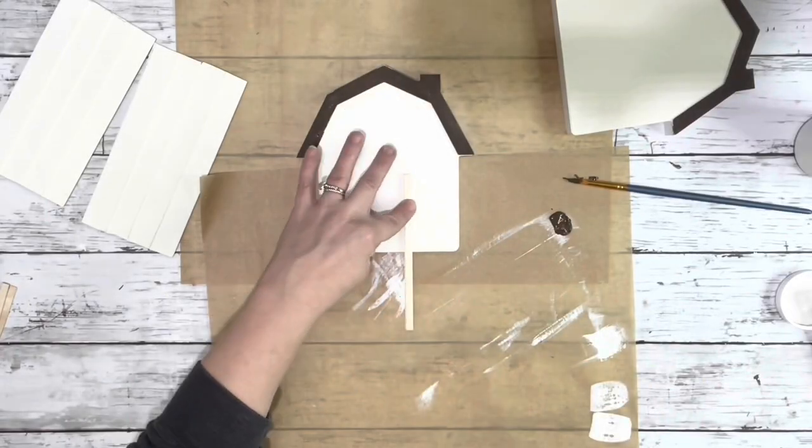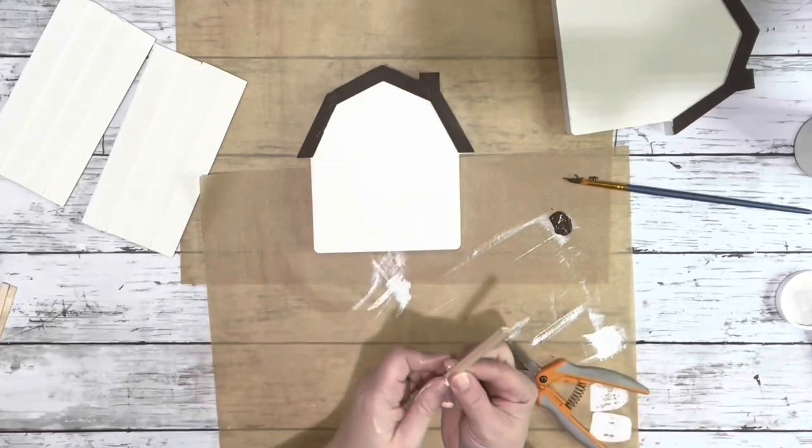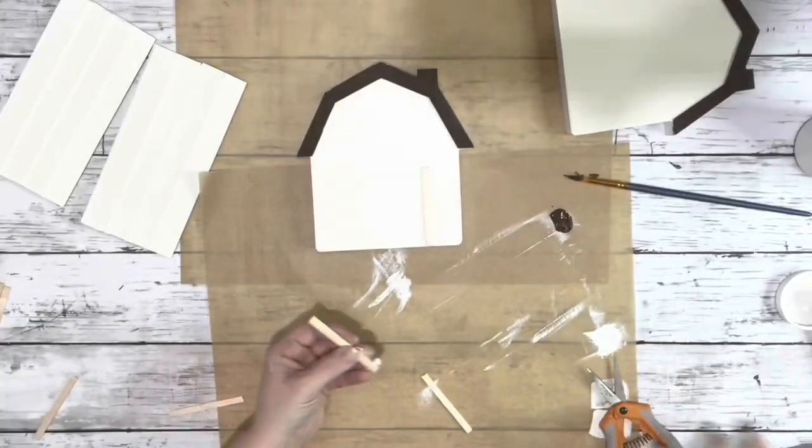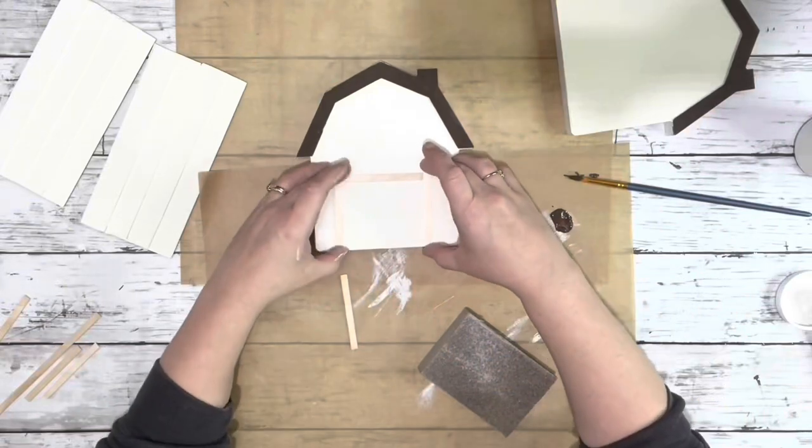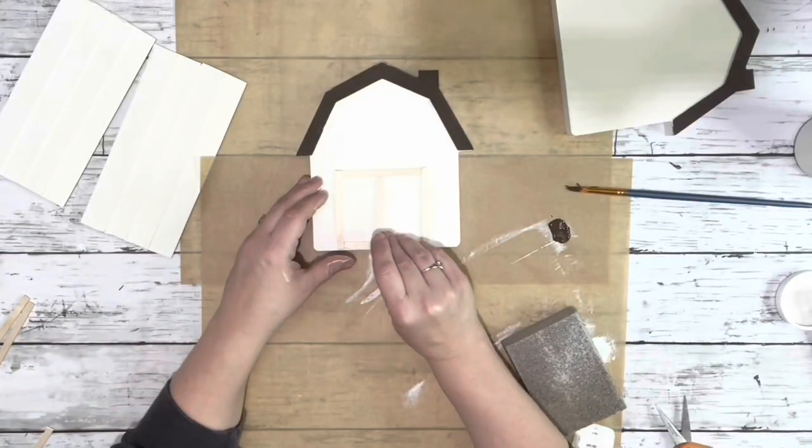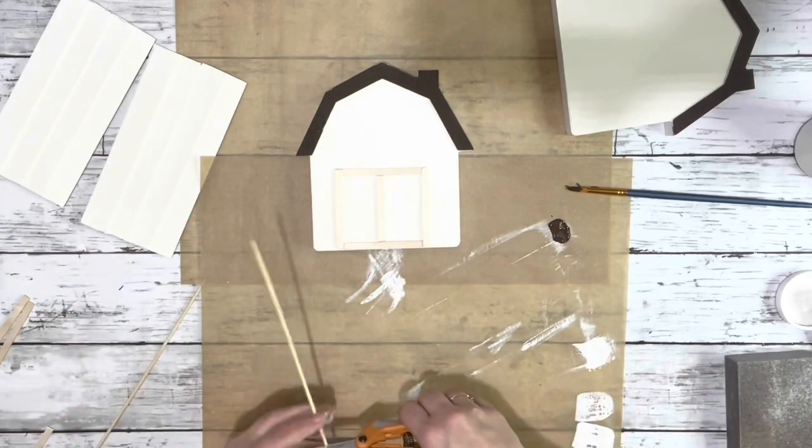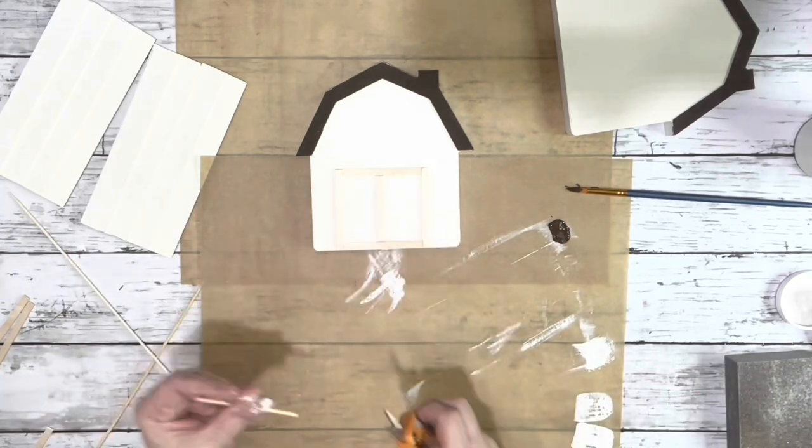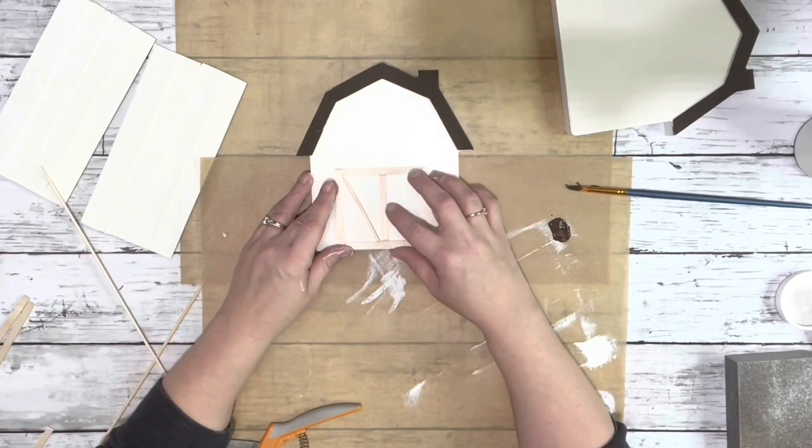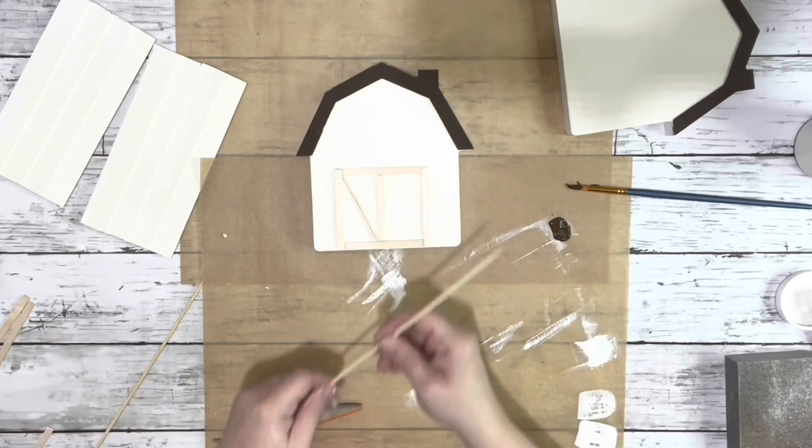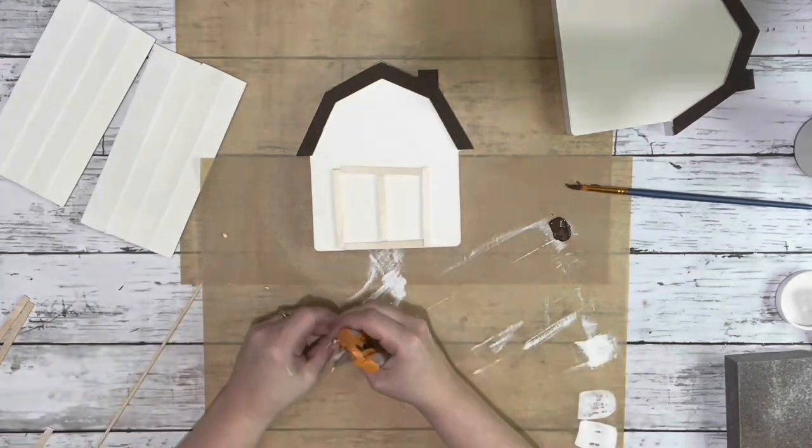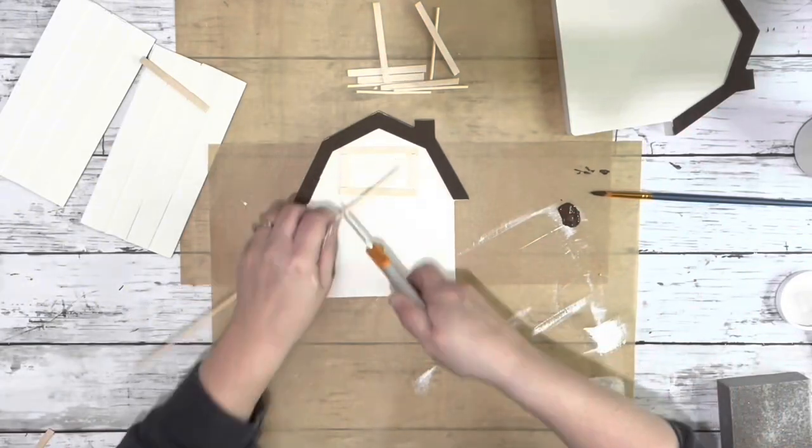Then I took the stir stick type craft sticks to make a door. I cut down two pieces about the same length for the sides of the doors, and then two pieces for the top and bottom, making like a little box, and then a line stir stick in the center. Then I cut down the bamboo skewers to make an X inside each door. I made a window above those, like a rectangle with the skewers in the center.